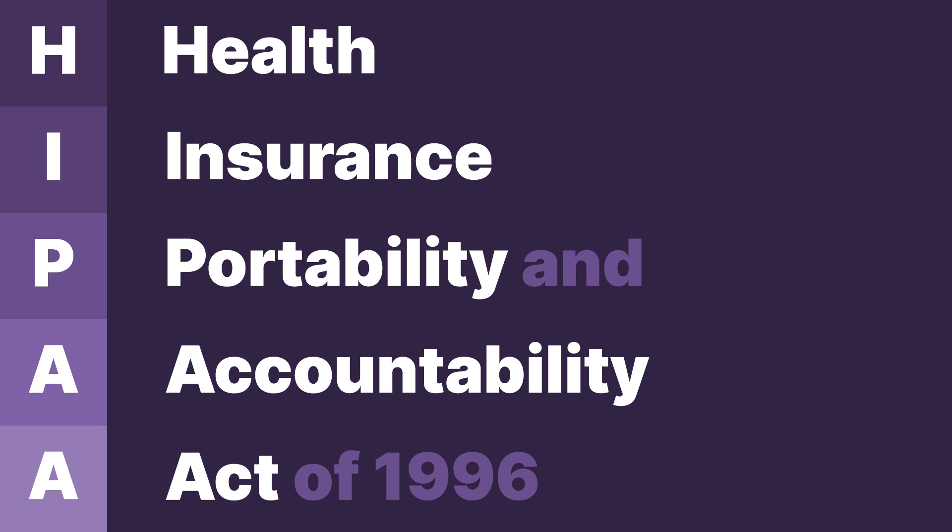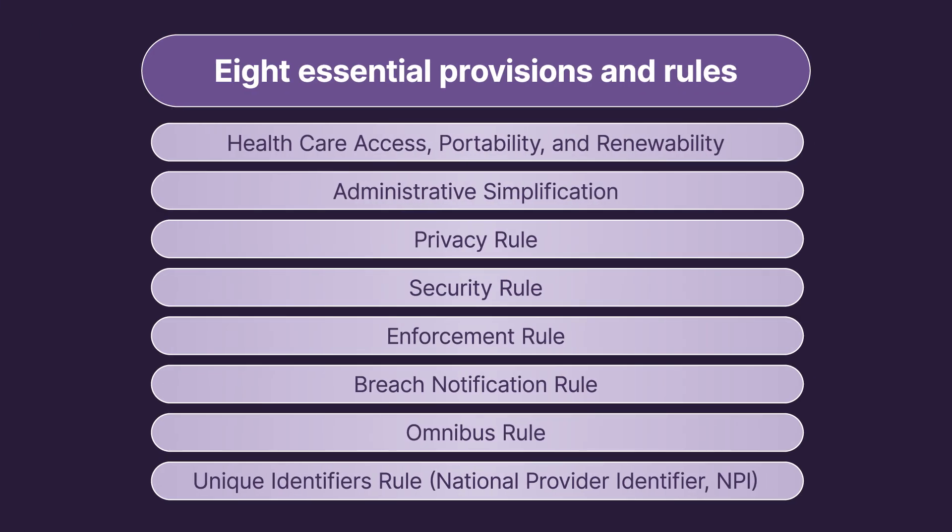In summary, the Health Insurance Portability and Accountability Act of 1996, or HIPAA, is a set of regulations that provide people with greater access to, control over, and degree of privacy concerning their health care and personal health care information. The central provisions are health care access, portability, and renewability; prevention of health care fraud and abuse; administrative simplification; medical liability reform; privacy rule; security rule; enforcement rule; breach notification rule; omnibus rule; and unique identifiers rule, or National Provider Identifier (NPI). These provisions outline the rights patients have to receive health care coverage and maintain the privacy of their health information, as well as the responsibility health care providers have to manage and protect that information and to simplify the process of obtaining care.